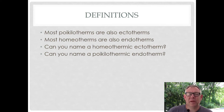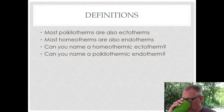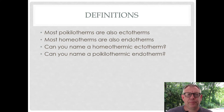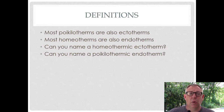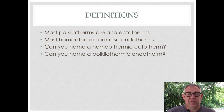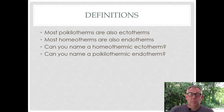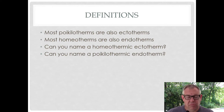What about a poikilothermic endotherm? Poikilotherm means the body temperature varies. Endotherm means the organism creates their own body heat. So for example, think of something like a hibernating bear. It's an endotherm — bears are mammals, they create their own heat. But when they hibernate, their body temperature drops quite a bit. So that's why it's good to be precise with these terms.